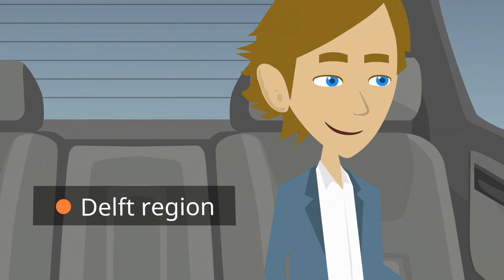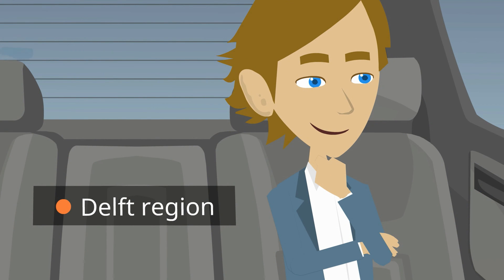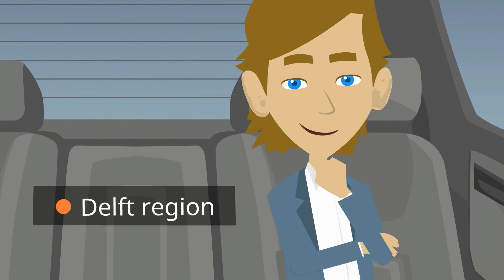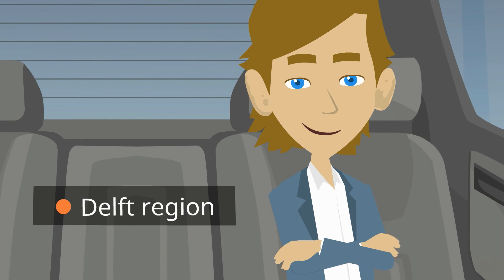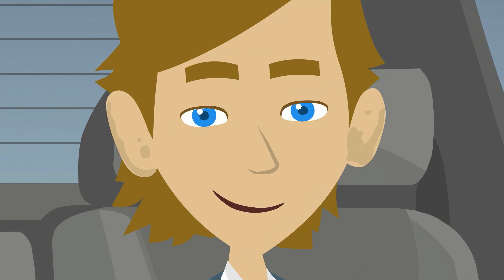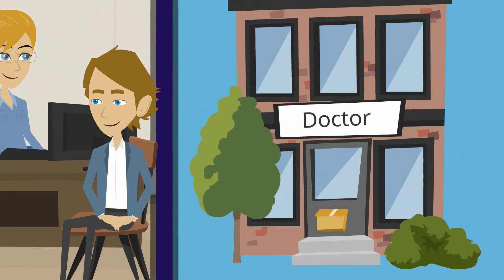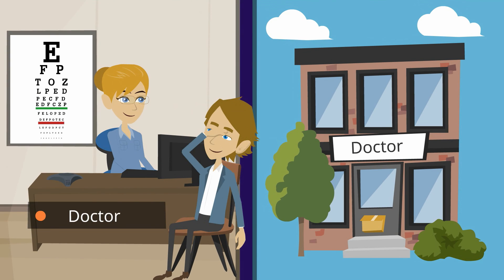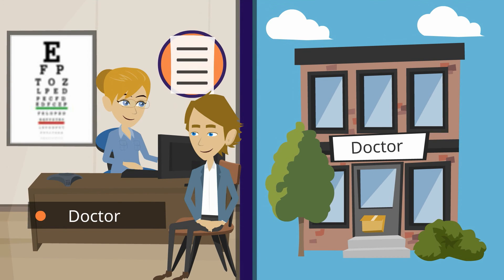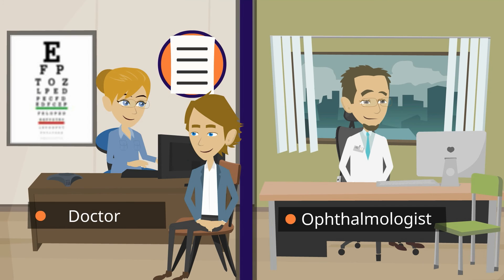Ira's condition is treated by various healthcare institutions in the Delft region. In recent months, he has noticed that his eyesight has deteriorated significantly. After a brief examination, his doctor refers him to the ophthalmologist at the hospital in Delft.